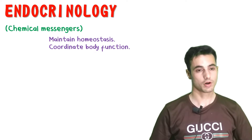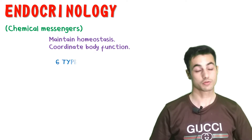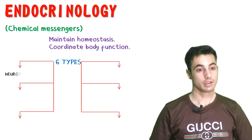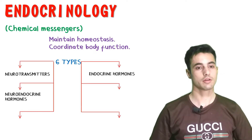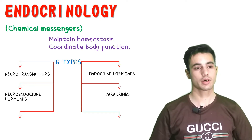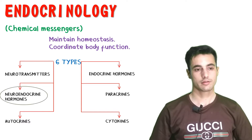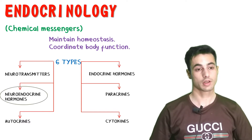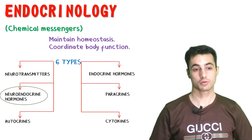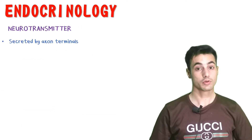Chemical messengers maintain homeostasis throughout the body and coordinate body functions. We have divided chemical messengers into six types: neurotransmitters, endocrine hormones, neuroendocrine hormones, paracrines, autocrines, and cytokines. In this series of videos, we are only going to discuss neuroendocrine hormones and endocrine hormones in detail.